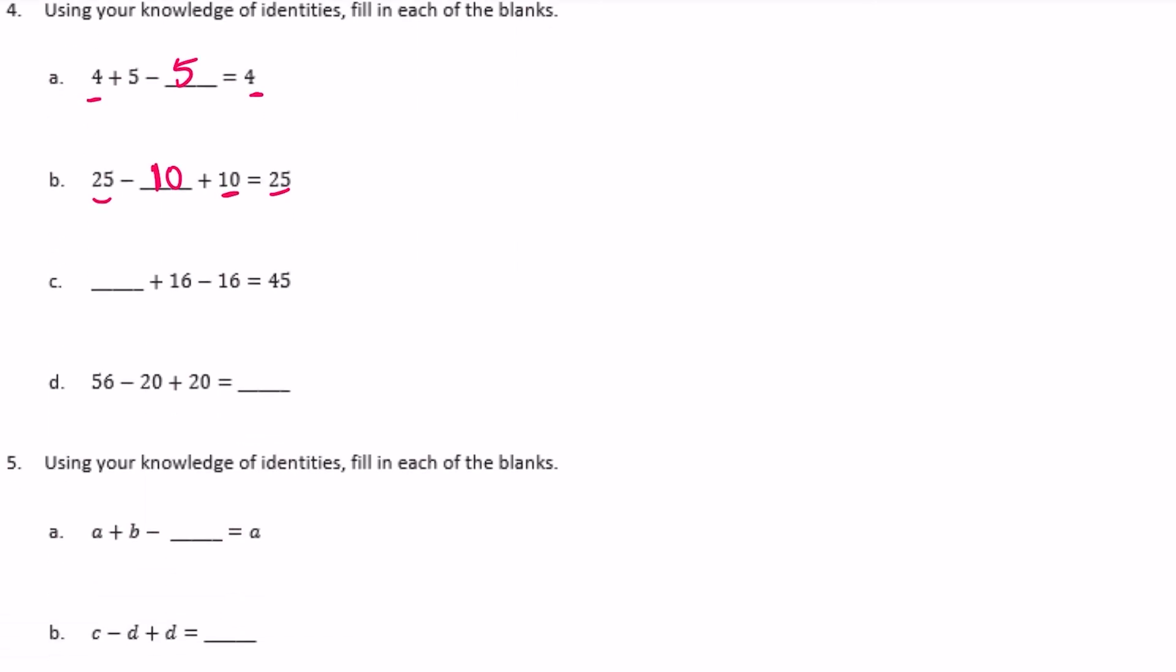Something plus 16 minus 16. So these are going to cancel each other out and we end up with 45, which means that we start with 45. And then 56 minus 20 plus 20, those cancel each other out, so we're just going to get 56.